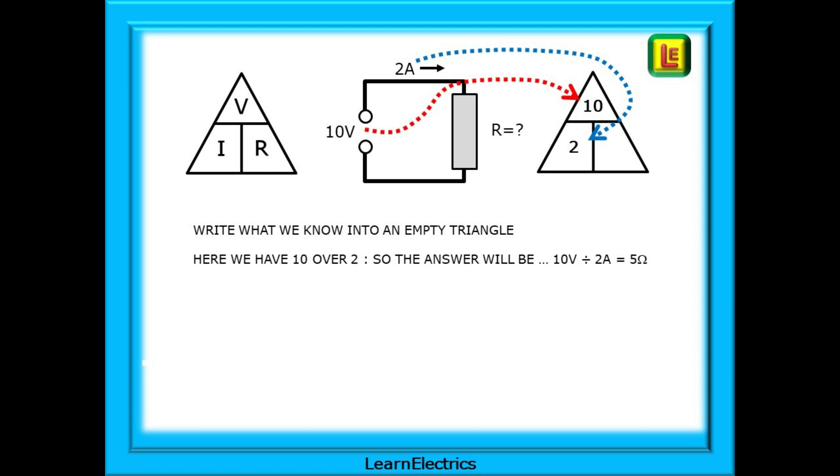If we replace the V and I in an empty triangle with the values that we know, 10 and 2 in this case, the actual positions of the numbers tell us the mathematical calculation to perform. Here we have 10 over 2, and this is a division calculation. 10 divided by 2 is 5 Ohms.